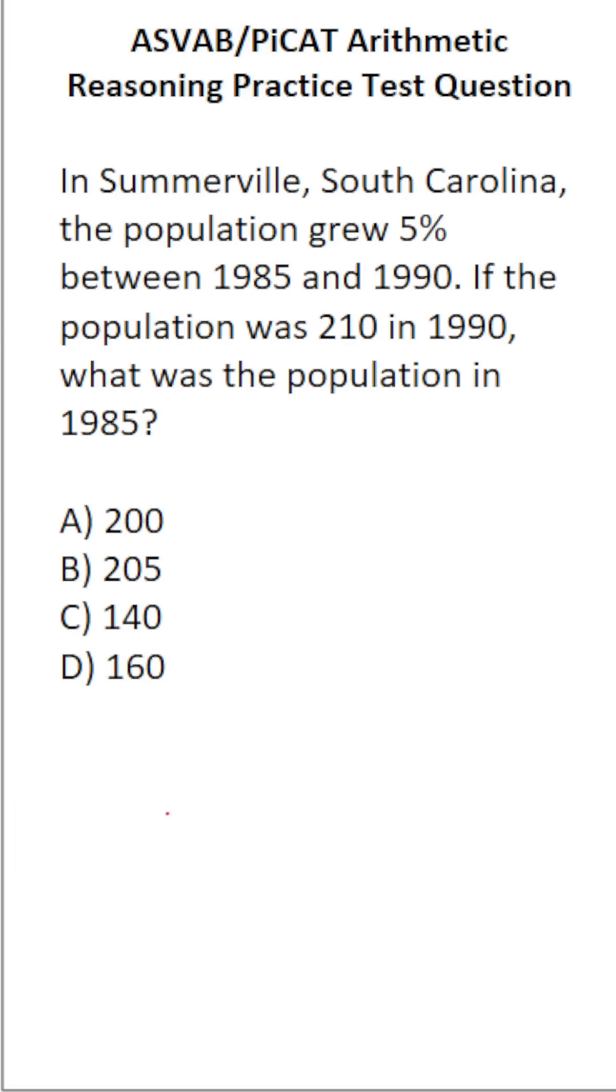This arithmetic reasoning practice test question for the ASVAB and PICAT says, in Somerville, South Carolina, the population grew 5% between 1985 and 1990. If the population was 210 in 1990, what was the population in 1985?